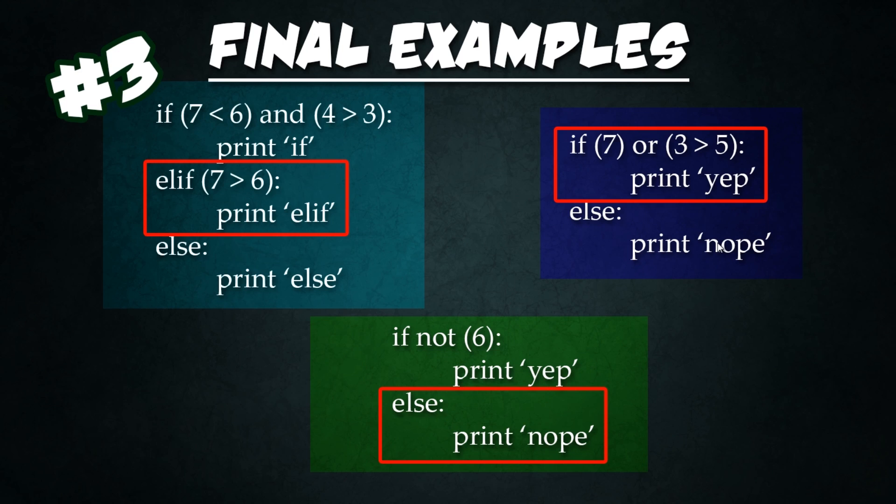Here we are at the end of lesson number three. And if you actually ran each of these, you'd find that elif was the one that ran because of the logic going on inside of it. So up top you have if seven is less than six, which it never is in any universe, that'll never be true. It says and, so we're just going to cancel this whole thing out. If this had said or, then we would continue on to test if the next statement was true. Since it says and, it means both values must be true in order for the code below to be executed. So instead, we jump to the next statement, elif.